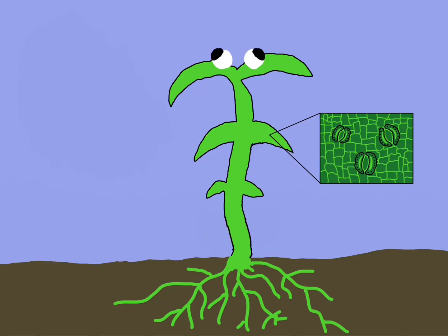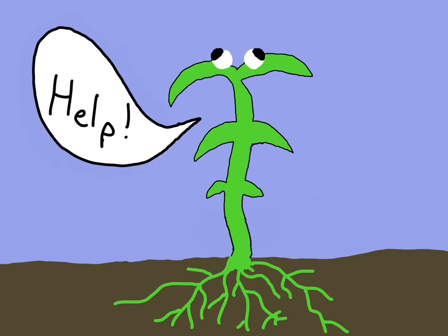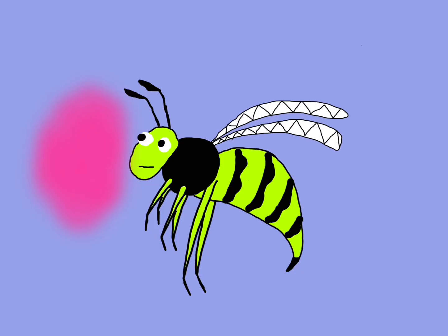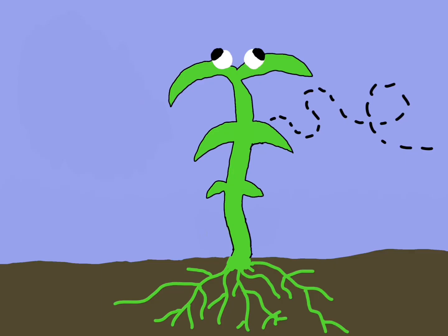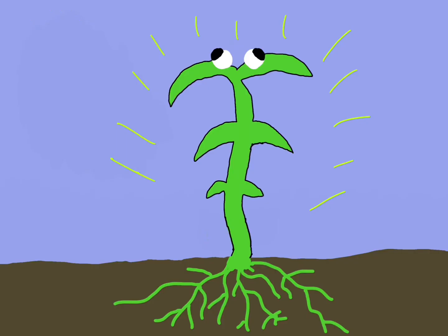Whenever the plant is under attack — in this case by cutworms — it will call for help by sending out VOCs in the hopes of receiving aid. For example, if a wasp were to recognize the compound, it would fly to the plant to feed on the cutworms, saving the plant from the annoying pest.